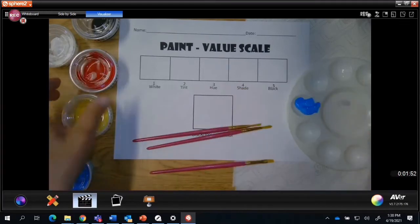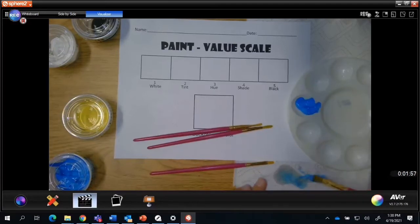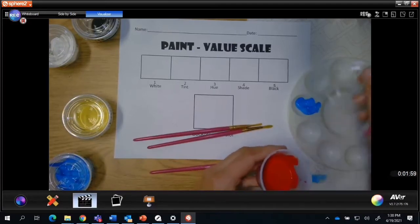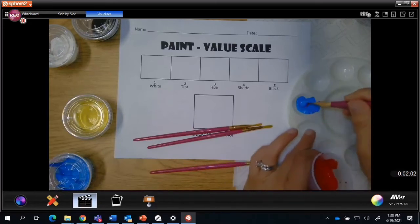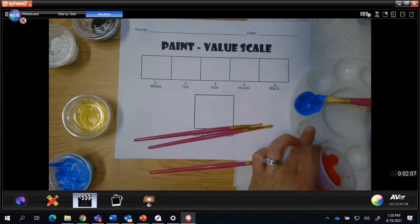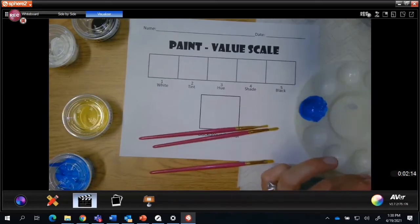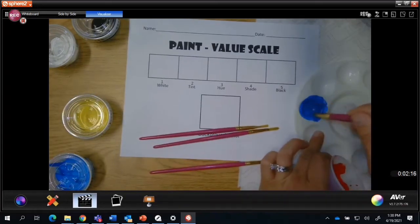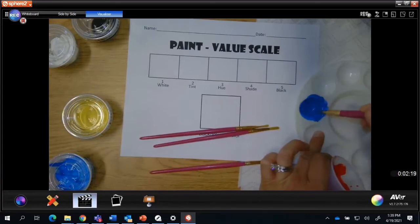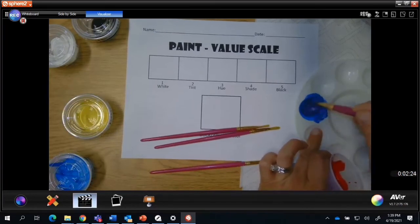I'm going to start with my blue, then I'm going to clean my brush and dry it off so I don't end up watering it down. I'm going to add just a small amount of red to my paint until I get the blue violet color that I want. I'm going to need to add just a little bit more. So this is going to be my tertiary color.